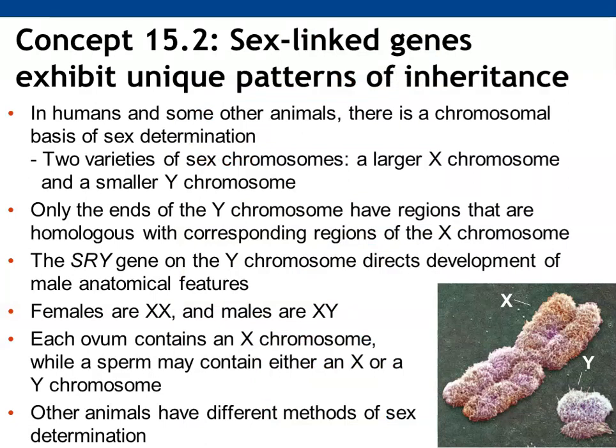Section 15.2 focuses on sex-linked genes. In humans and other animals, chromosomal differences determine an individual's sex. For humans, we have a larger X chromosome and a smaller Y chromosome. There are only small sections at the ends of the Y chromosome that are homologous with regions on the X chromosome. The majority of genes coded for on the Y chromosome deal with male anatomical features — one example is the SRY gene. Females get two copies of the X chromosome; males get both an X and a Y.